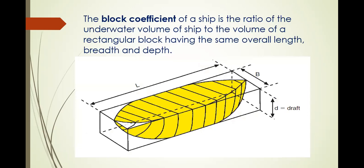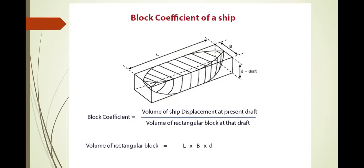The block coefficient of a ship is the ratio of the underwater volume of the ship to the volume of the rectangular block having the same overall length, breadth, and depth. The formula for block coefficient is: volume of ship displacement divided by the volume of the rectangular block, where the volume of the rectangular block equals length times breadth times draft.